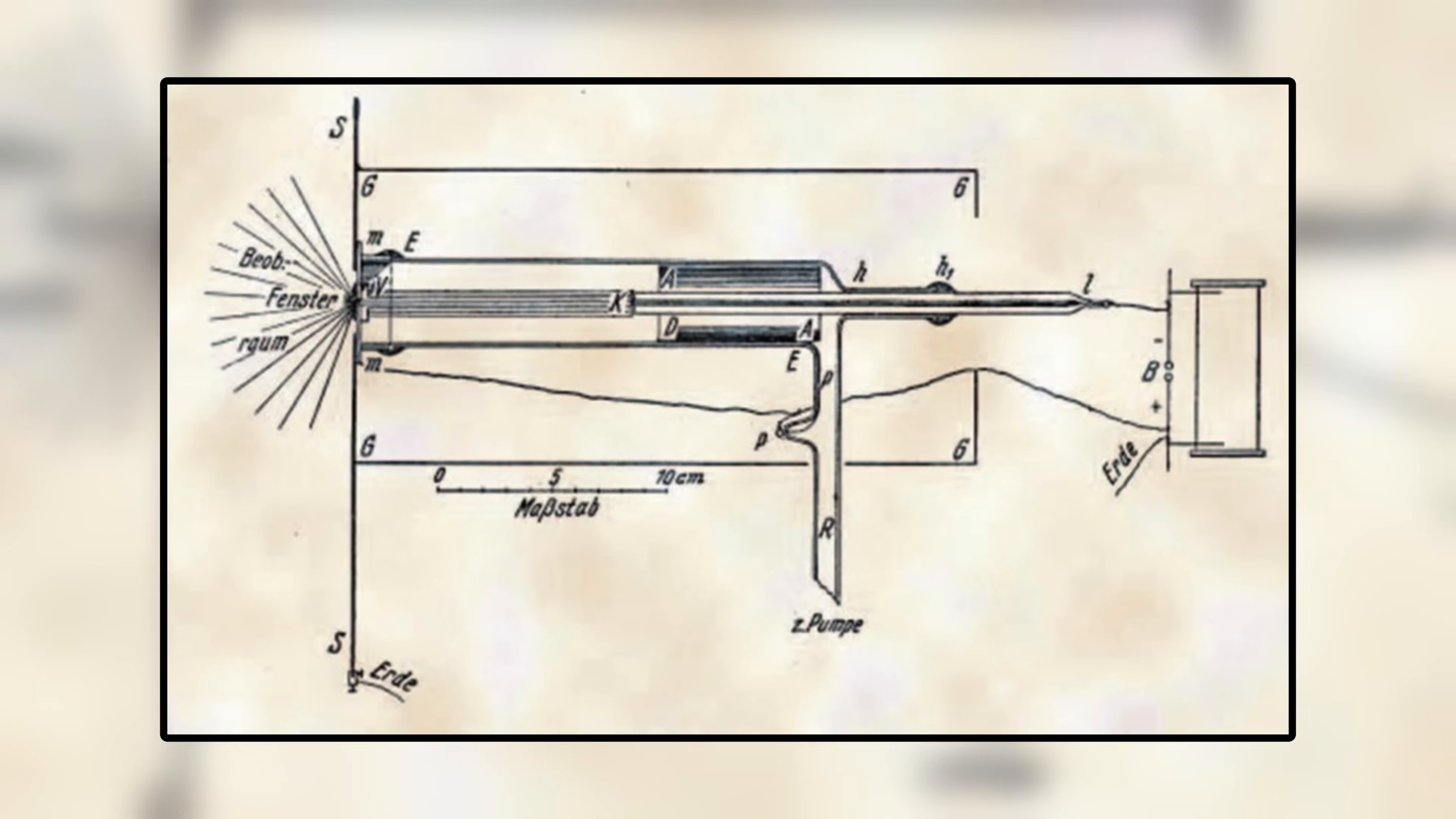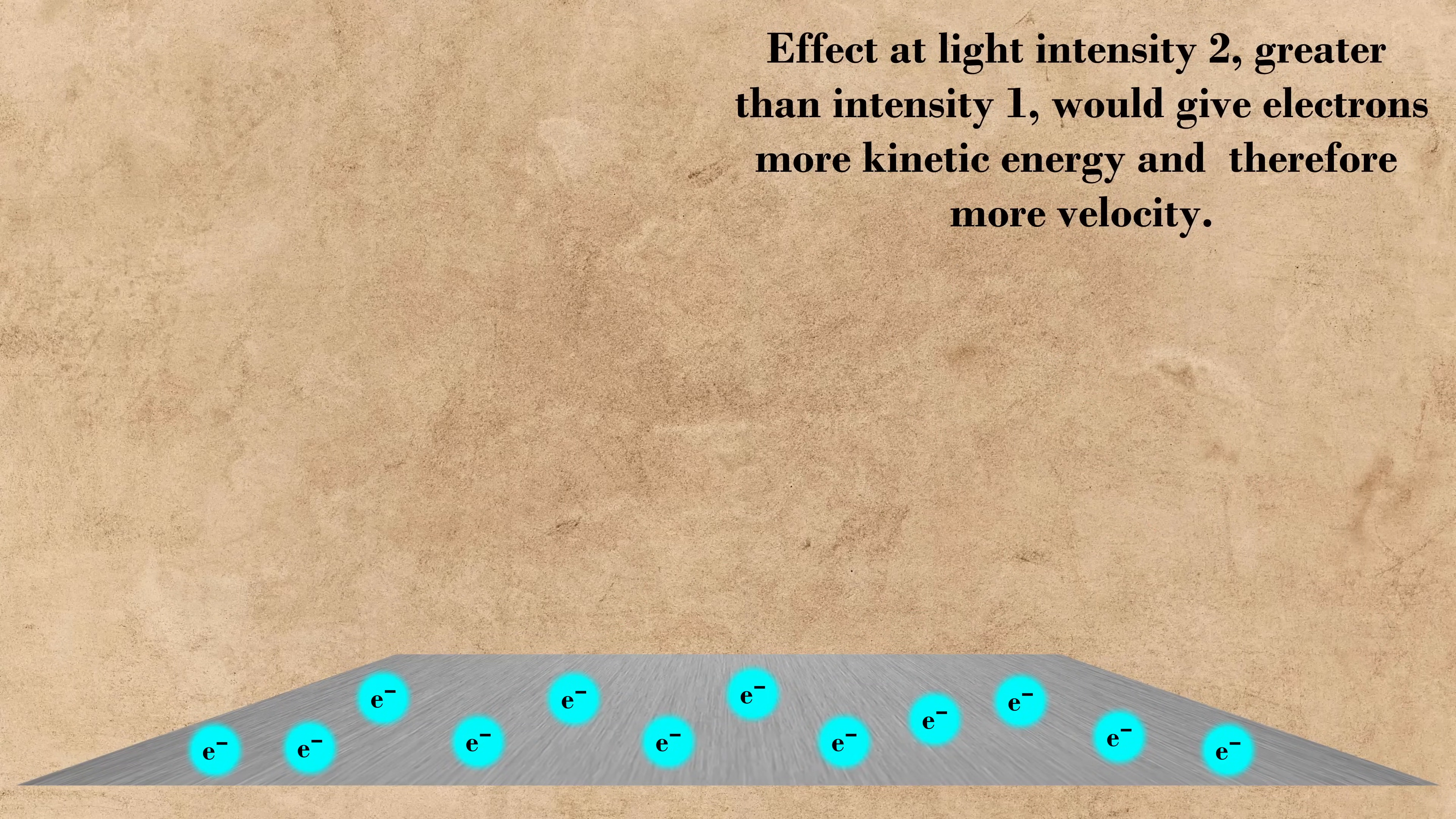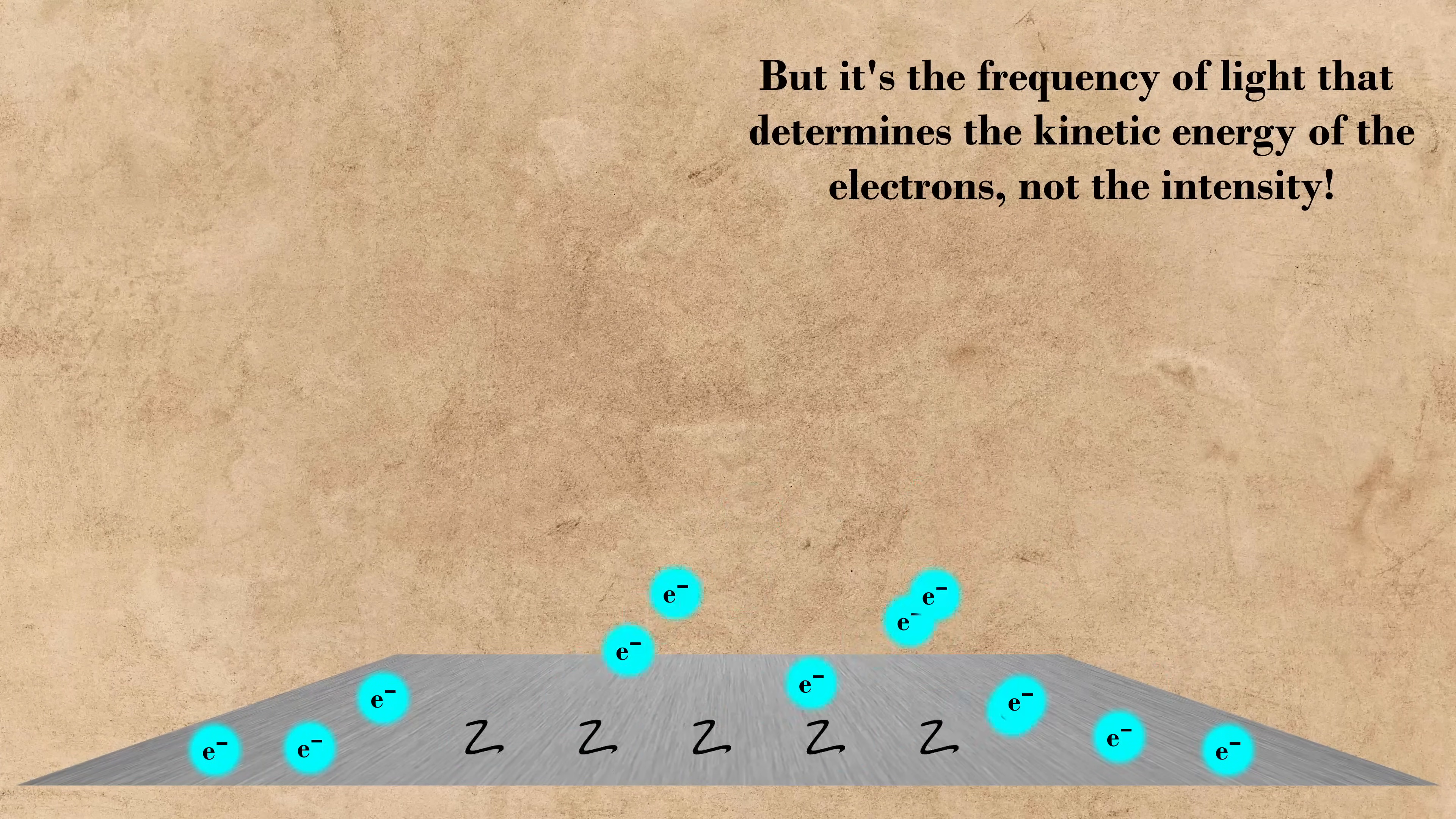However, the photoelectric effect was a direct experimental contradiction to this theory in two key ways. The first was that, according to classical wave theory, the energy from a light wave is uniformly distributed and dependent solely on its intensity, meaning that the kinetic energy of these so-called photoelectrons should increase as the intensity of light also increases. However, Lenard showed that the kinetic energy varies based on the frequency of light and not on its intensity, and thus we have our first contradiction.